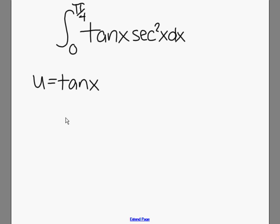Once you choose your u, you then have to find the du of the u that you chose. In our case, du equals the secant squared of x dx.